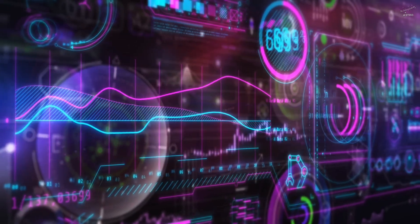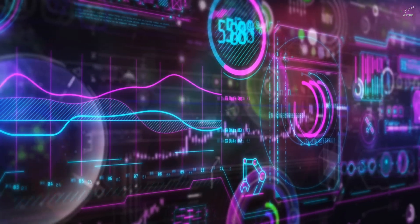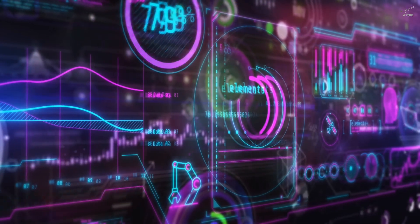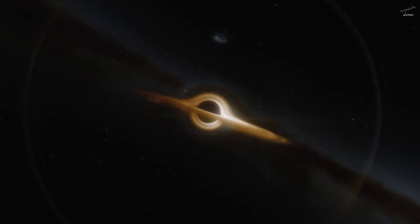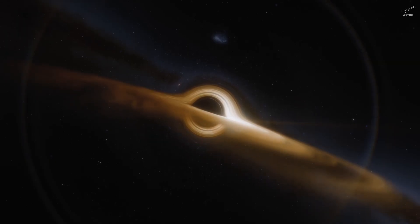Because what we call mass might just be the density of data. And where information gets dense, space bends. The result? Everything falls inward. You see it clearest in black holes, where density reaches extremes so extreme that space collapses.